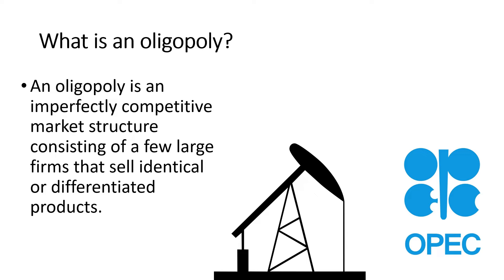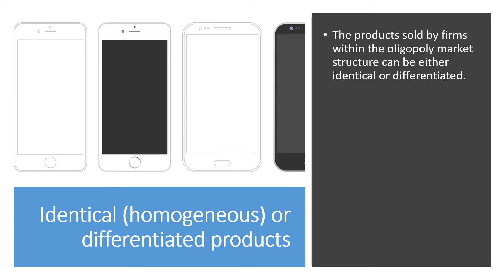An oligopoly is an imperfectly competitive market structure consisting of a few large firms that sell identical or differentiated products. In the case of OPEC, or the Organization of the Petroleum Exporting Countries, they are a small group of countries exporting a relatively identical commodity, oil. The products sold by firms in this market structure can be identical or differentiated.